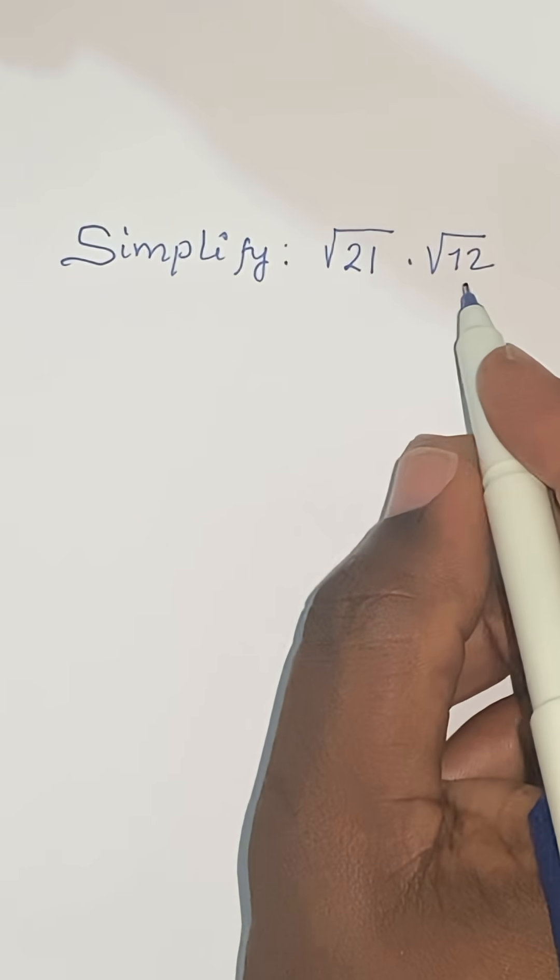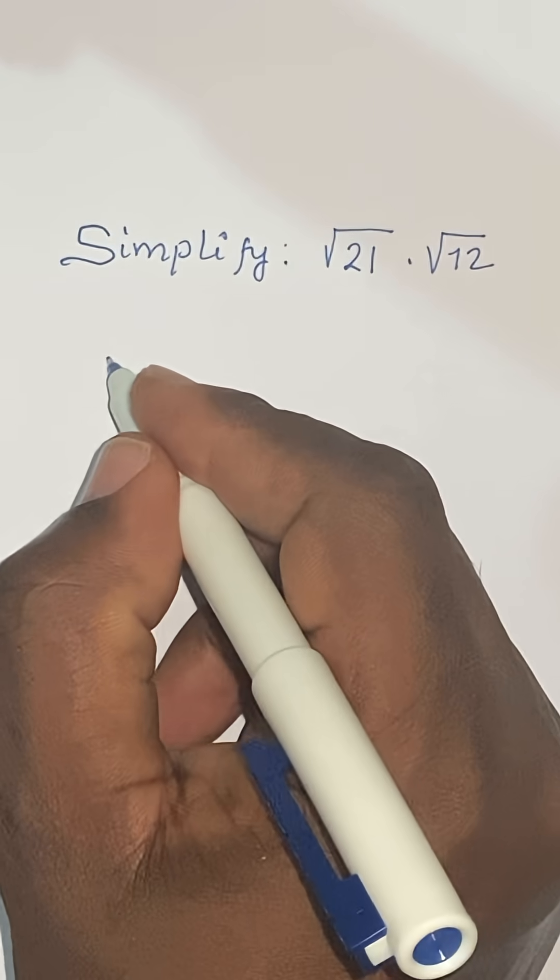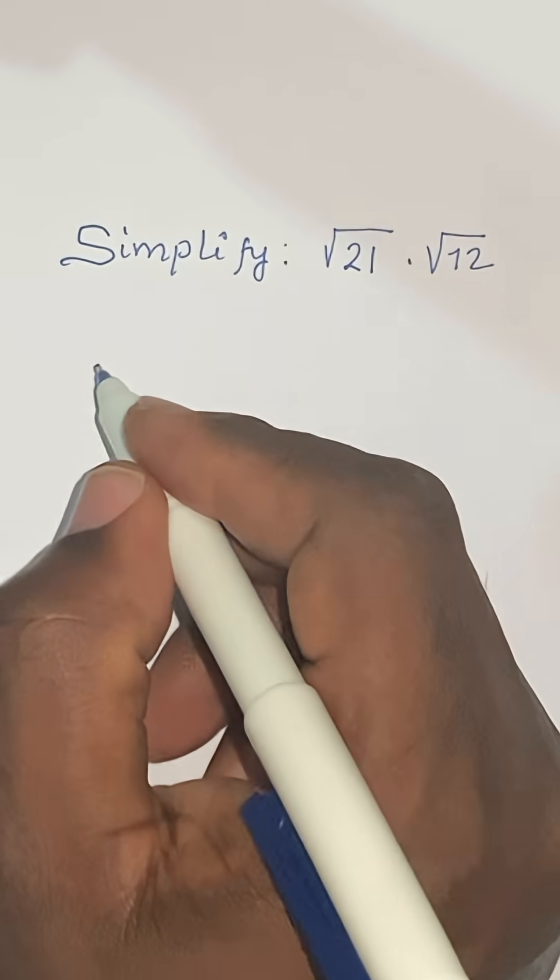Simplify root 21 times root 12. The first thing we do is to find the prime factors of the radicals.